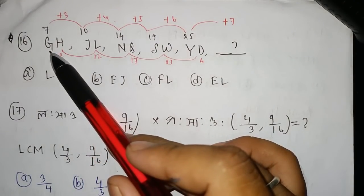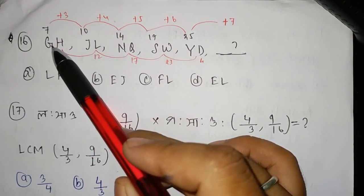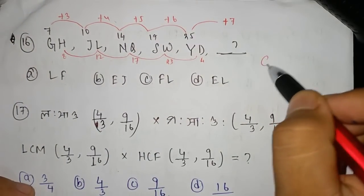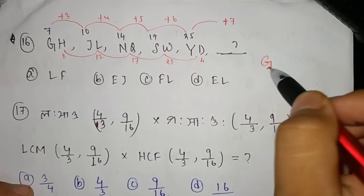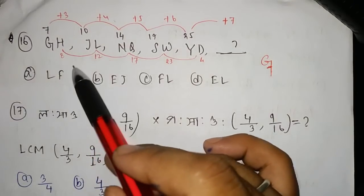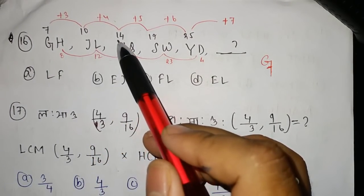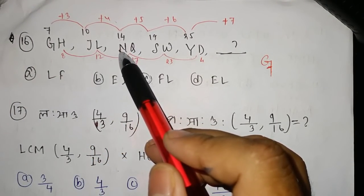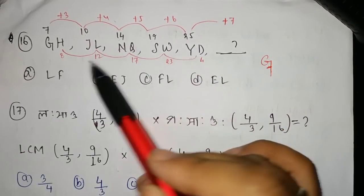This topic uses what we call place value definitions. A zero place value is seven, because G is seven. Since G is seven, J is ten, N is fourteen, S is nineteen, and Y is twenty-five.